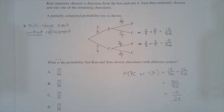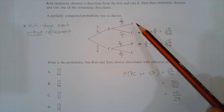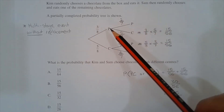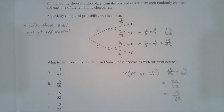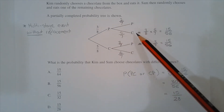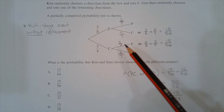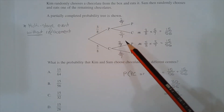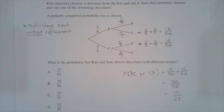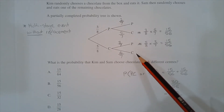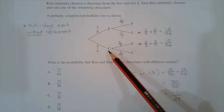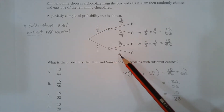In the second stage there are seven chocolates to choose from. The probability of choosing peppermint given peppermint was chosen first is two out of seven. The probability of choosing caramel given peppermint was chosen first is five out of seven. The probability of choosing peppermint given caramel was chosen first is three out of seven, and the probability of choosing caramel given caramel was chosen first is four out of seven.